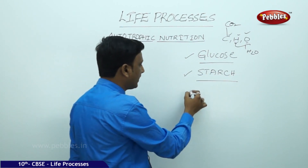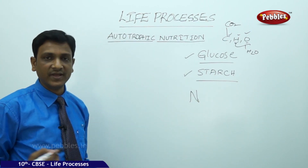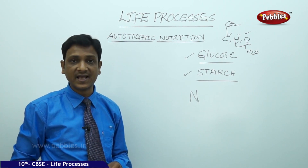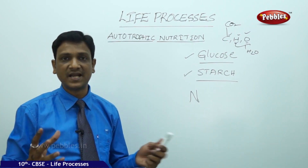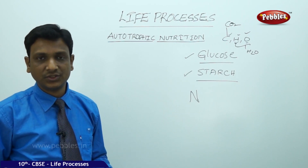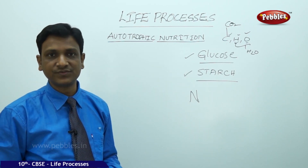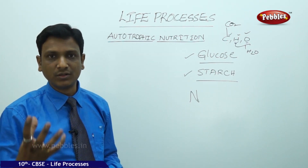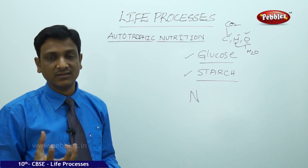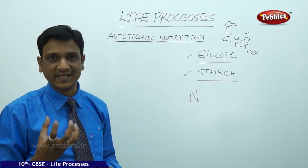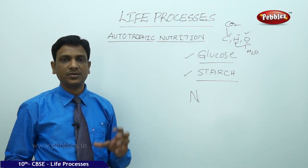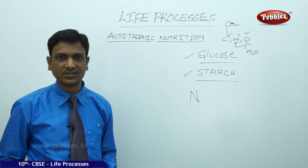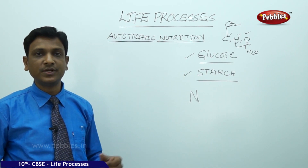But to make proteins, nitrogen is required. Where does the nitrogen come from? Nitrogen is present in the atmosphere — 78 percent of air is nitrogen. However, plants cannot directly take in nitrogen from the atmosphere through their stomata. Plants cannot use nitrogen in its gaseous form from the air.